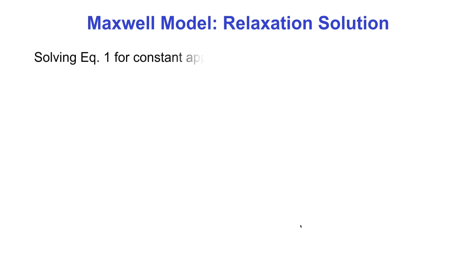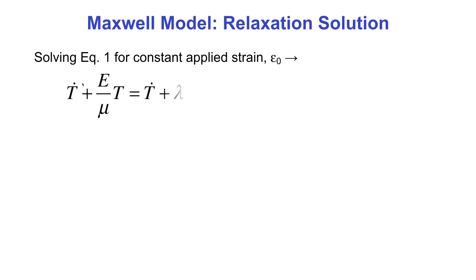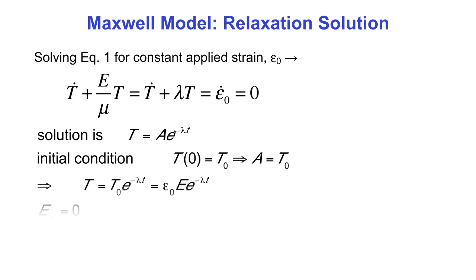For the relaxation solution, we solve this equation for the case of constant applied strain, epsilon naught. Our equation becomes t dot plus lambda t equals zero, where lambda equals e over mu, since epsilon naught is constant so epsilon naught dot equals zero. This has a decaying exponential solution of the form t equals a e to the minus lambda t. Applying the initial condition, the constant a equals the stress at time zero, t naught.